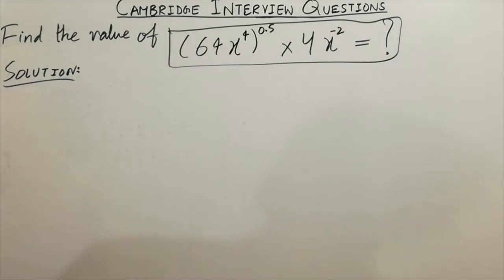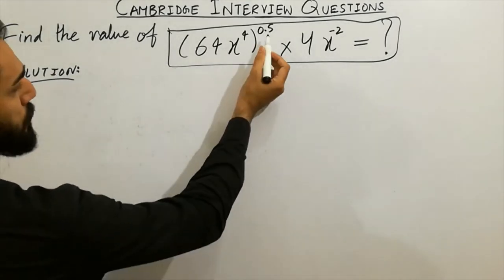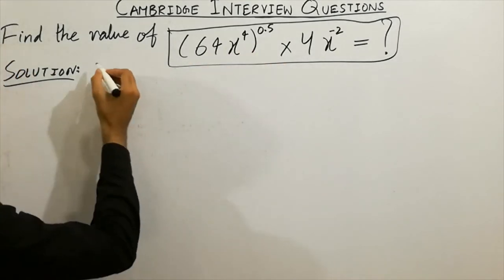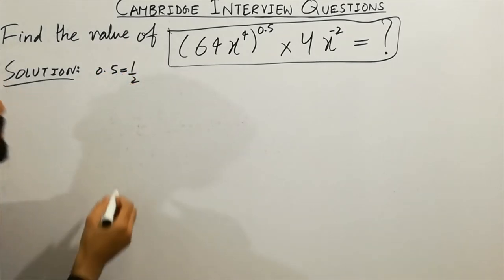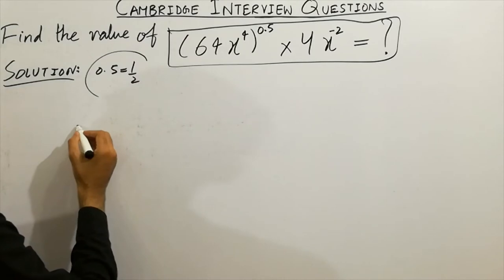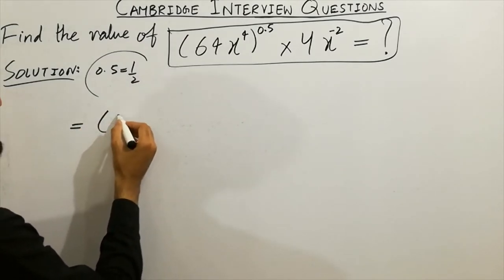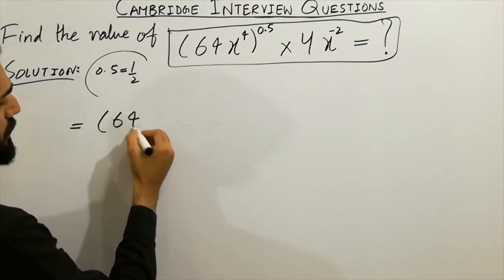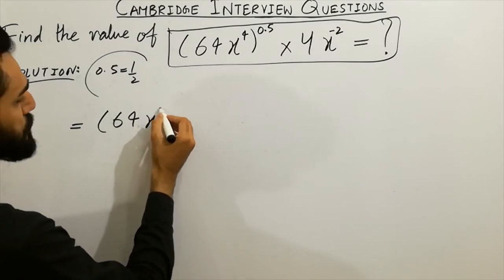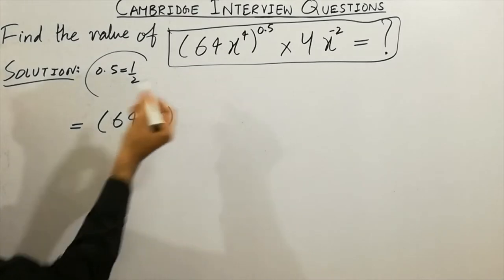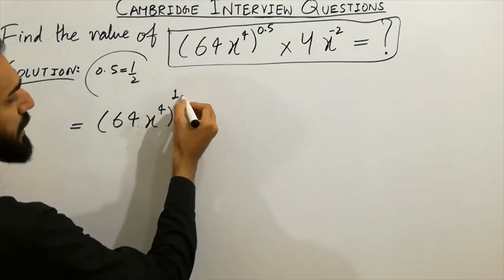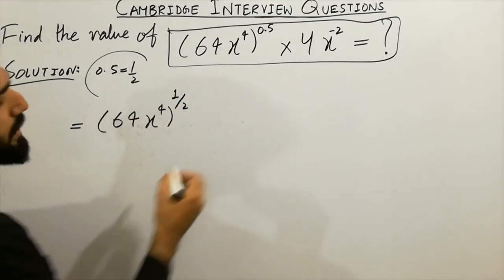0.5 can also be written as 1/2. So to solve this question, I can write here: (64x^4)^0.5, which can also be written as (64x^4)^(1/2) multiplied by 4x^(-2). That's it, next step.